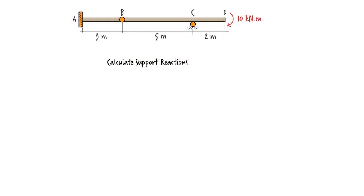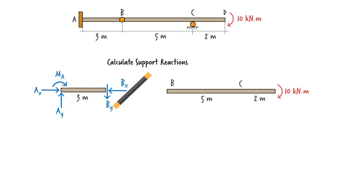To do so, first we need to calculate the support reactions at A and C. Since there is an internal hinge at B, we divide the beam into two segments and draw the free body diagram for each segment.